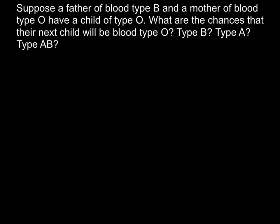Hi, today's problem is: suppose a father of blood type B and a mother of blood type O have a child of type O. What are the chances that their next child will be blood type O, type B, type A, or type AB?